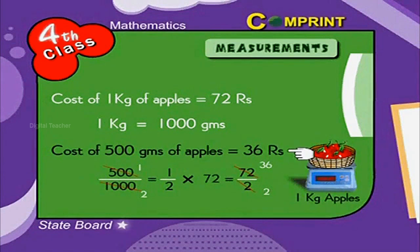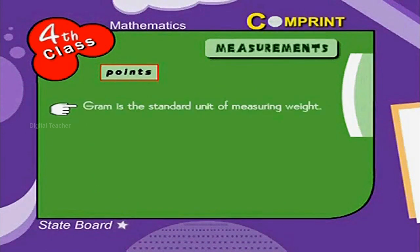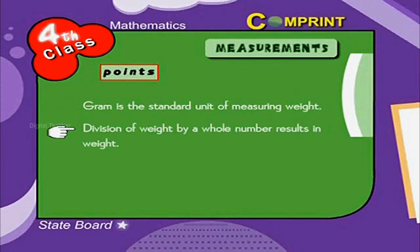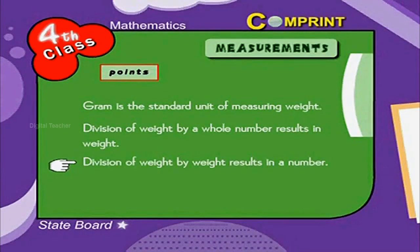Points to remember: Gram is the standard unit of measuring weight. Division of weight by a whole number results in weight. Division of weight by weight results in a number, such as an amount. 1000 grams is equal to 1 kilogram.